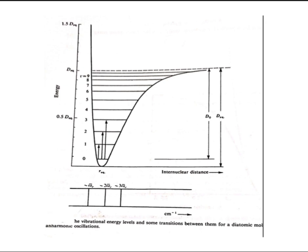The change in energy ΔE equals the oscillation frequency. The oscillation frequency at equilibrium is given by the symbol ω̄e. For the first excitation (v=0→1) the energy difference is ω̄e, for the next transition (v=0→2) it is approximately 2ω̄e, and for the next (v=0→3) it is approximately 3ω̄e, all given in wavenumbers (cm⁻¹).